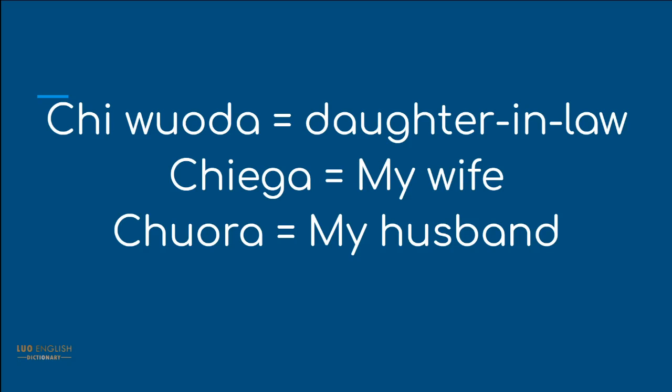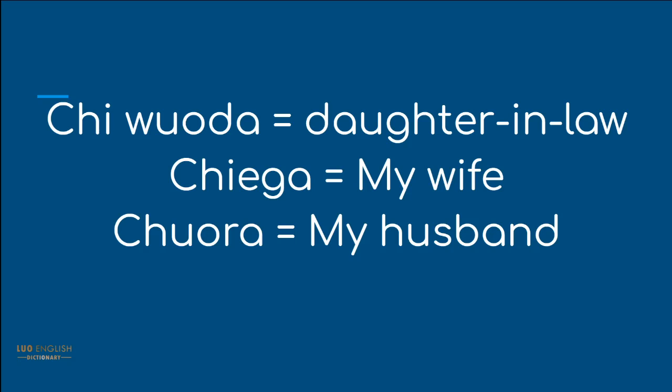So, Chiwoda — that's your daughter-in-law. Chiwoda. Chiega — my wife. Chiega. Chwora — my husband. Chwora. So those are the C words.